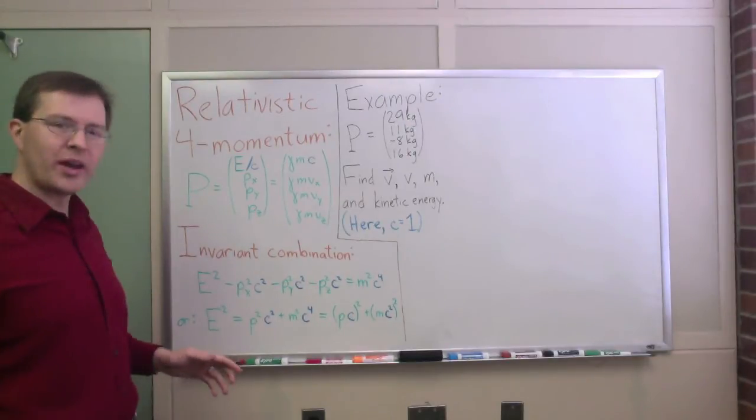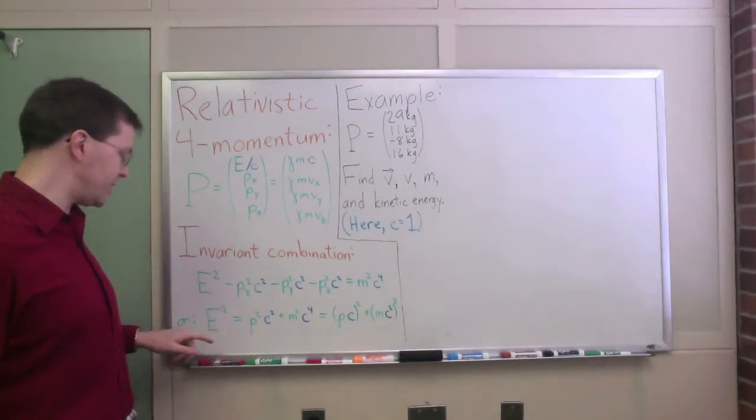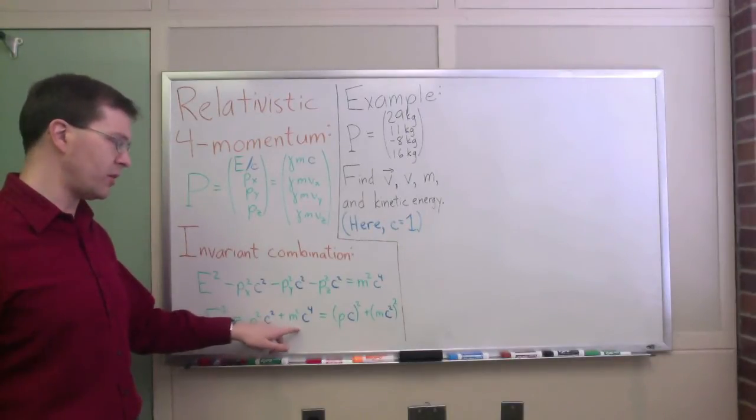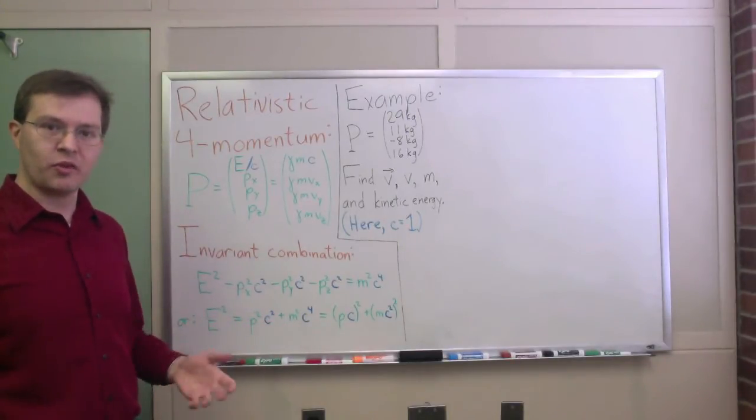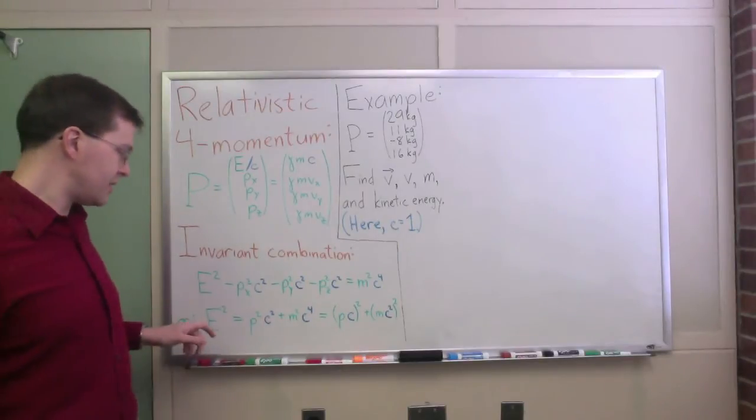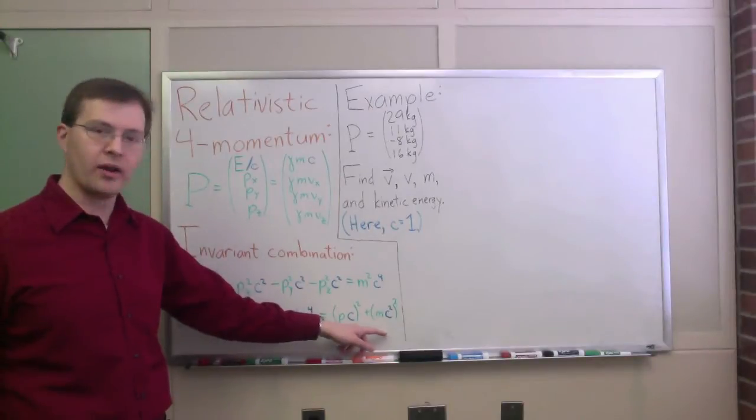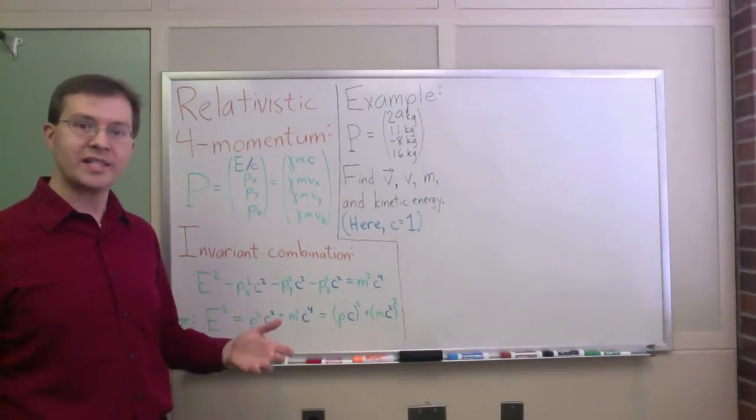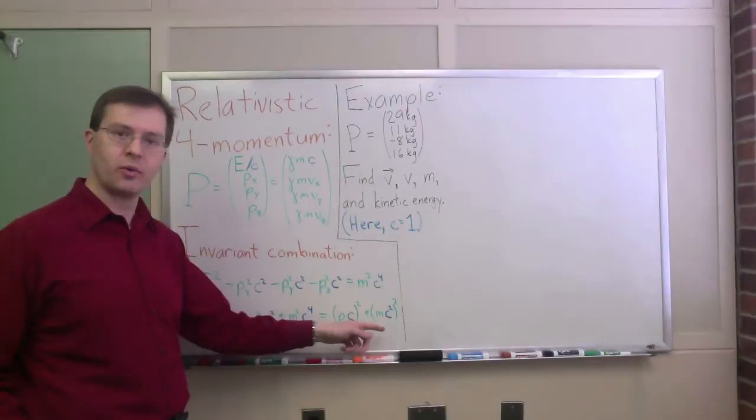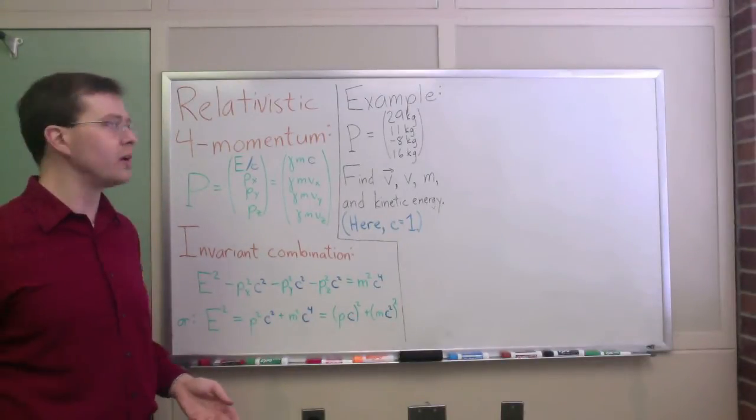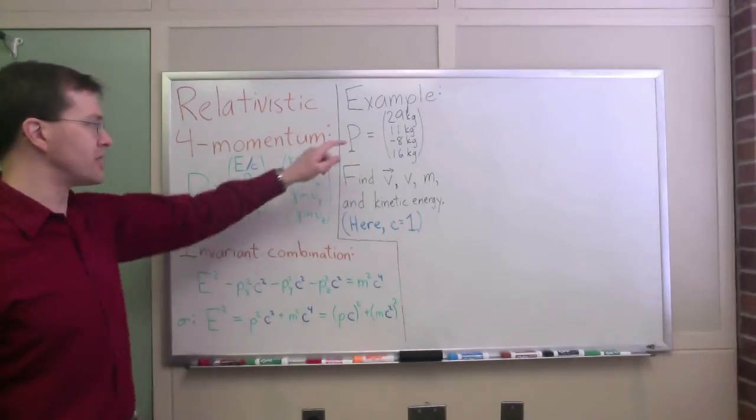And the way you usually see this written down is total energy squared equals P squared plus M squared. And if we put in the factors of C, that's energy squared equals PC squared, that's energy of motion, plus MC squared squared. Hey, E equals MC squared. Rest energy is the mass energy MC squared of the object. So, okay, we're going to use these things that we've studied before in studying a particular example.